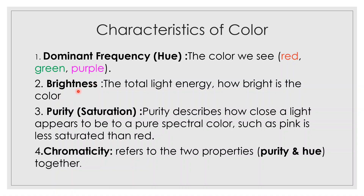Next is brightness. Brightness describes how bright the color is — the total light energy. How bright the color appears is what we call brightness.